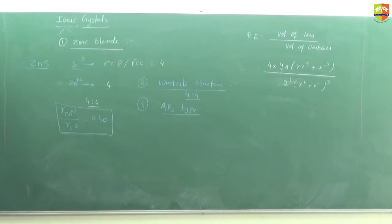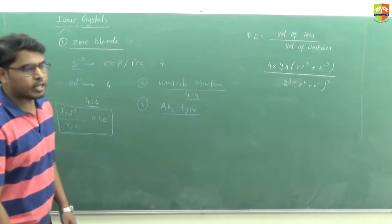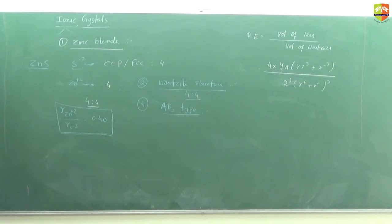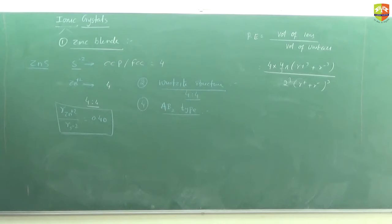AB₂ type structure - write down. This structure we also call the fluorite structure. Important: F-L-U-O-R-I-T-E. Example is CaF₂, calcium fluoride. Ca²⁺ ions are arranged in CCP manner, and F⁻ ions occupy all tetrahedral voids.